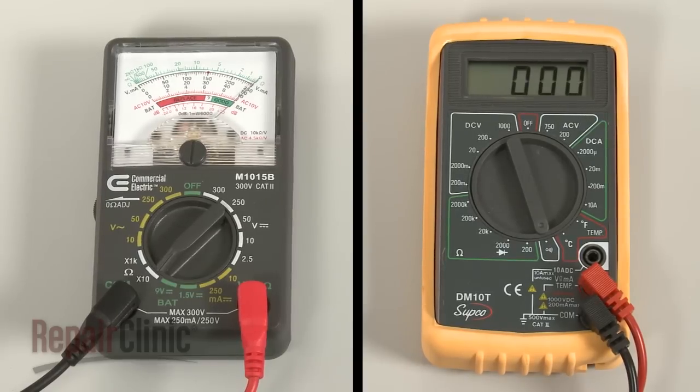If the meter reading shows zero ohms of resistance, the thermostat has continuity.